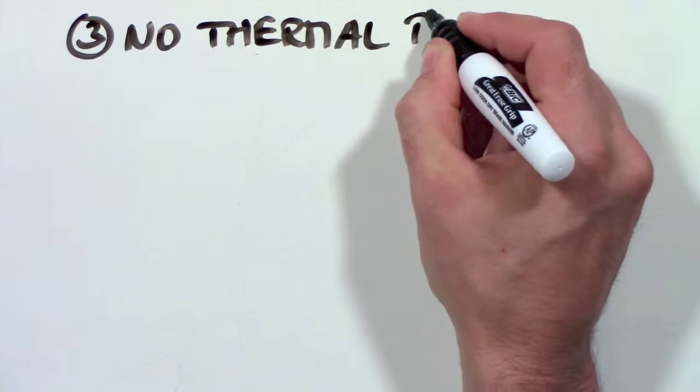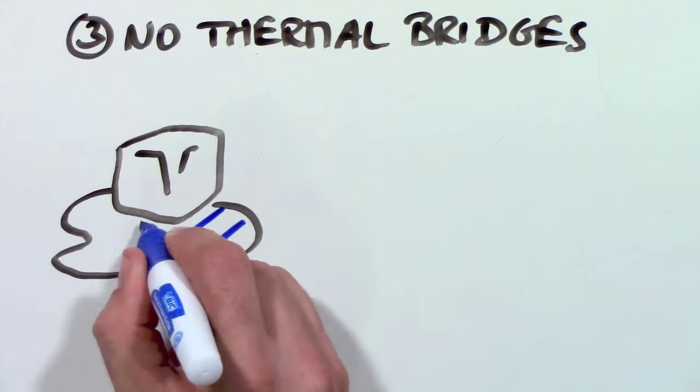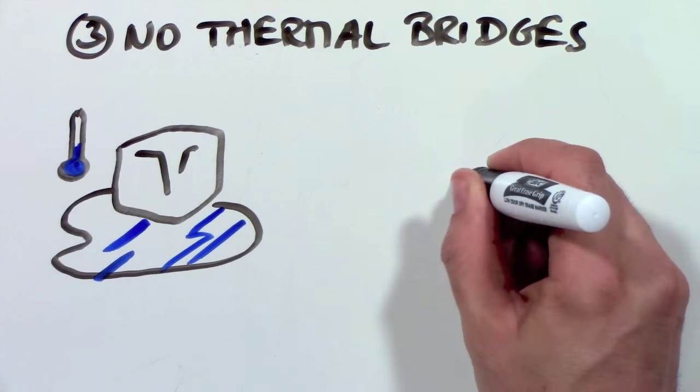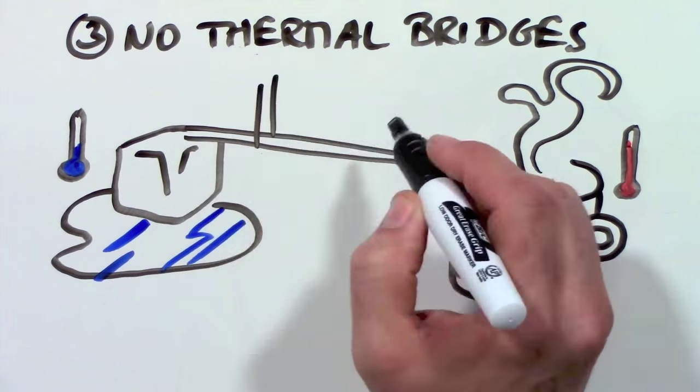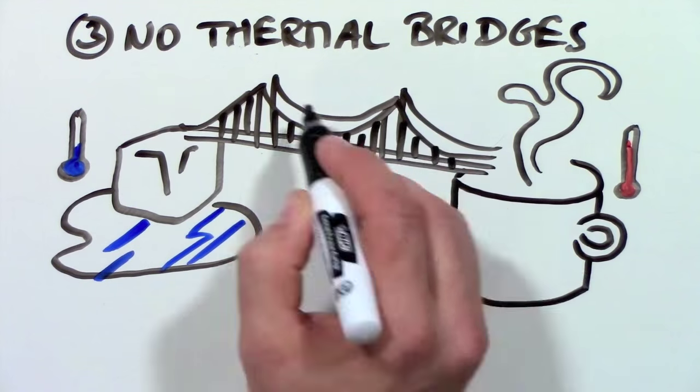3. No thermal bridges. A thermal bridge is like a road for heating energy in which warmth can travel right through your walls. As a matter of fact, most of our houses have thermal highways in our walls where heat can easily travel to the outside.